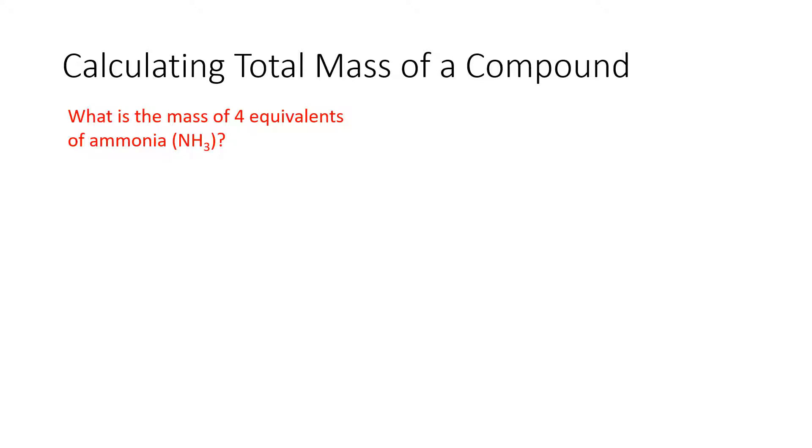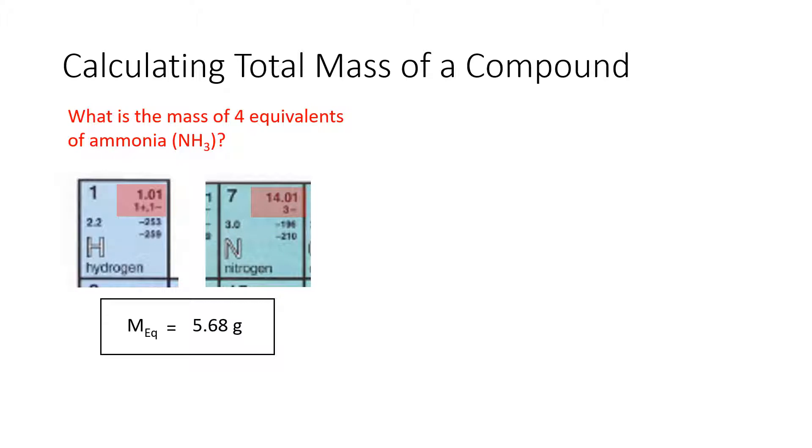So here we've got a question where we ask for the mass of four equivalents of ammonia NH3. We go to our periodic table and we found out the mass of equivalents in the previous steps. So if this was a question we may have to do that or we may be given the mass of one equivalent. Then what we know is the total mass, in this case the little m, will equal the mass of one equivalent times the number of equivalents.